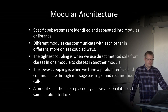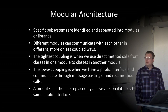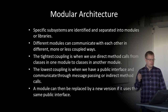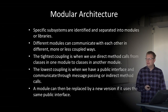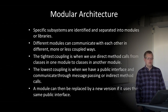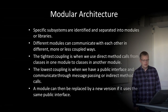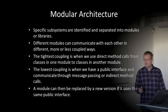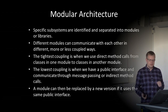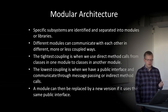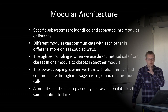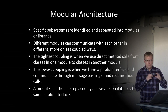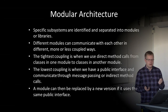A better approach is to use a modular architecture, where specific subsystems are identified and separated into modules or libraries. Different modules can communicate in more or less coupled ways. Tight coupling is when we use direct method calls from classes in one module to classes in another. The lowest coupling is when we have a public interface and communicate through message passing or indirect method calls. A module can then be replaced by a new version if it uses the same public interface — for example, swapping a file system manager or an AI module.